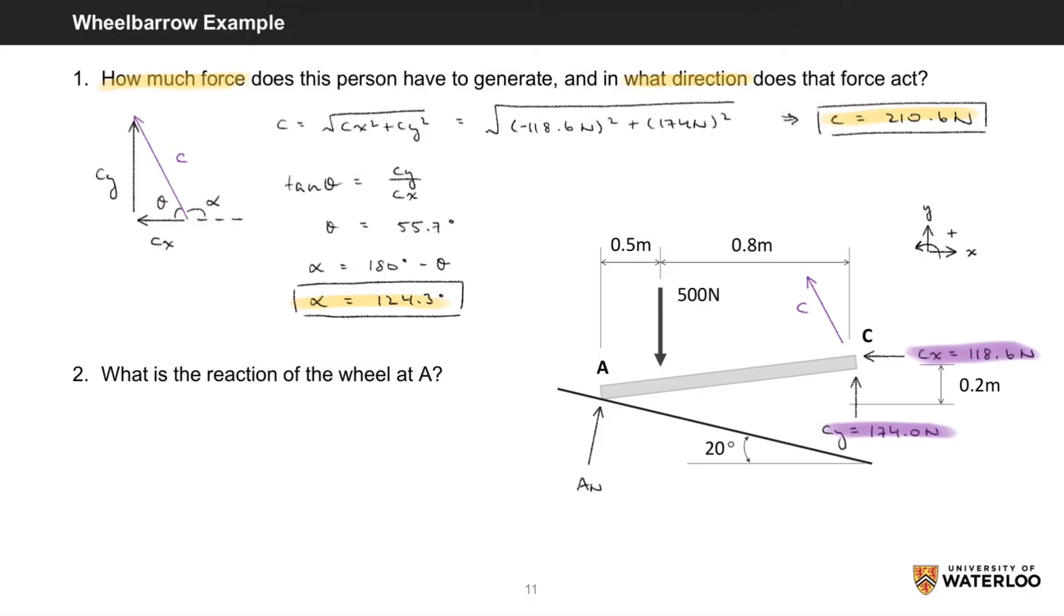The next question was what is the reaction of the wheel at A, which we called AN. And from before, using the sum of moments about A, we found AN to be 346.9 newtons.